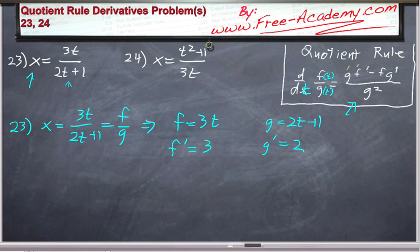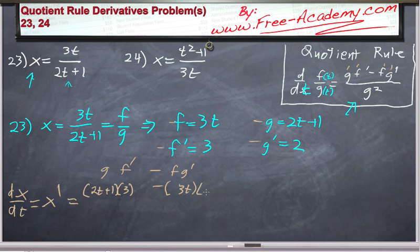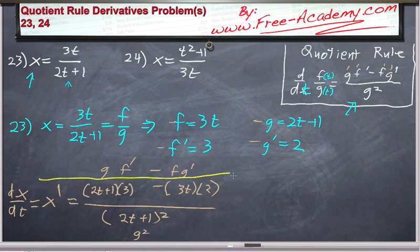Having f prime and g prime and f and g, we have all the components that we need to solve the derivative. So the derivative of x with respect to t, which is equal to x prime, is equal to g times f prime, which is 2t plus 1 times 3, minus f times g prime, which is 3t times 2, all divided by g squared, which is 2t plus 1 squared. If you take out these little notations that I wrote in the top and the bottom, you have x prime equal to this little bit of a mess there, which is not a complicated mess, and that's the derivative.